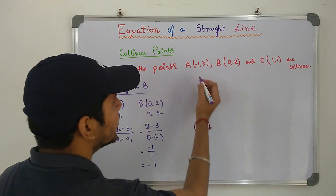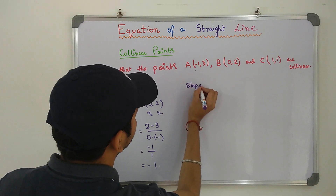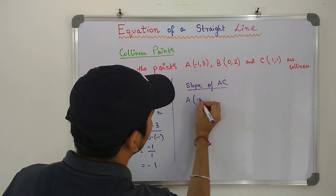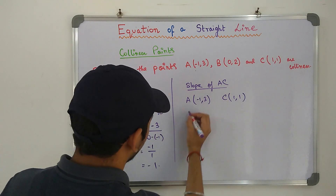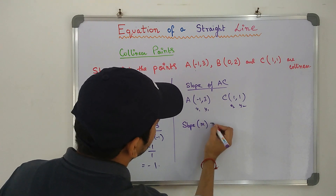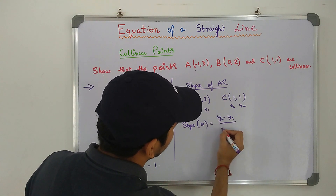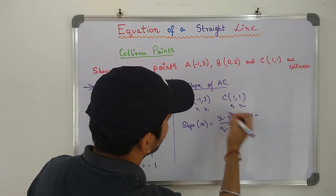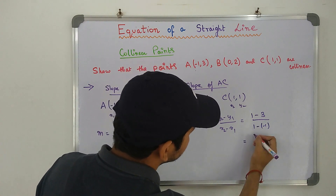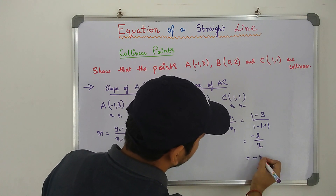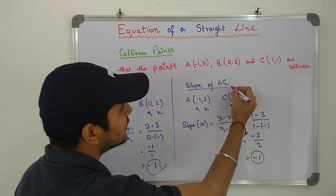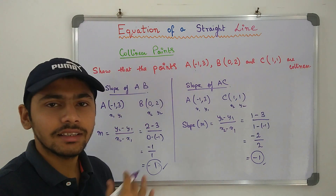Now we will find the slope of the line joining A and C. Let A(−1, 3) be x1y1 and C(1, 1) be x2y2. Slope M is equal to y2 minus y1 divided by x2 minus x1. y2 is 1, y1 is 3, x2 is 1 and x1 is −1, which gives us −2 divided by 2, which is ultimately equal to −1. The slope of AB is −1 and the slope of AC is −1. Hence, these 3 points are collinear.